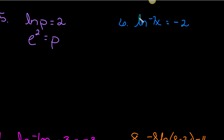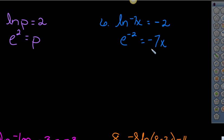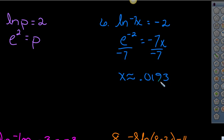Number six: the logarithm is isolated, and we have a negative 7 coefficient. Rewrite as a base-e exponential — the logarithm is the exponent, so negative 2 is the exponent, and that equals negative 7x. Divide both sides by negative 7 to isolate x. When you put this into your calculator, you get x approximately equal to 0.0193.